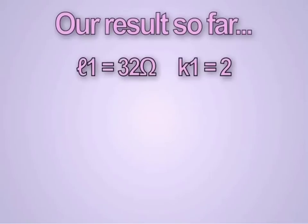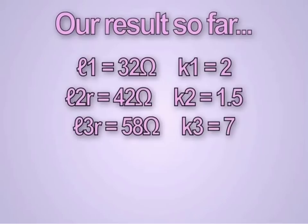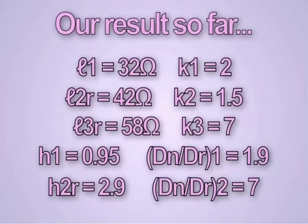So from our results so far, we have Rho 1 to be equal to 32 ohms, while K1 is 2. Rho 2 replacement is 42 ohms, while K2 is 1.5. Rho 3 replacement is 58 ohms, while K3 is 7. H1 equals 0.95. H2 replacement is 2.9. DN/DR1 is 1.9, and DN/DR2 is 7. So I like to arrange my data this way because it makes my calculation easier.